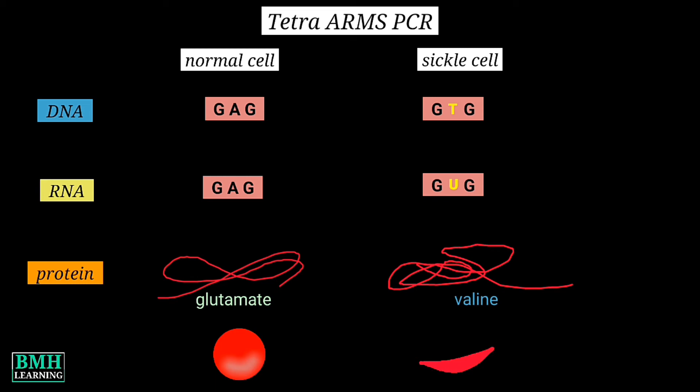Although to study these traits or other SNPs, various techniques are available, but they are more time consuming and expensive. So for this we have Tetra ARMS PCR. This is one of the most economical and rapid technology.